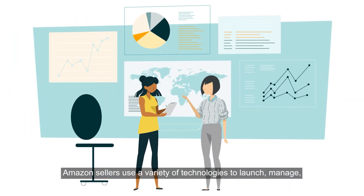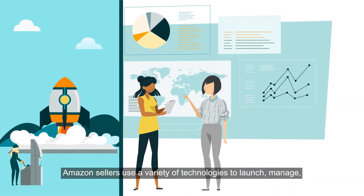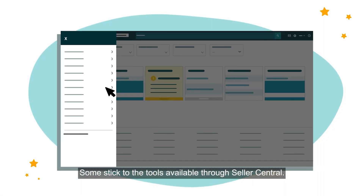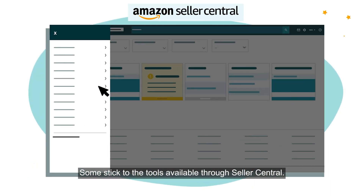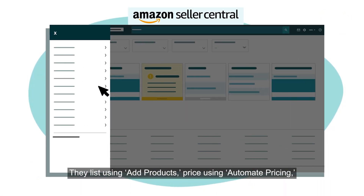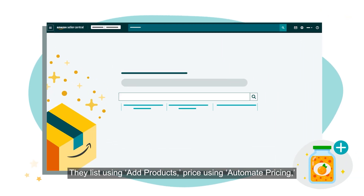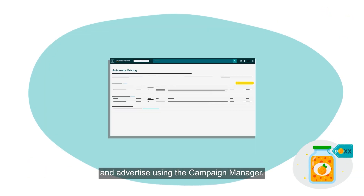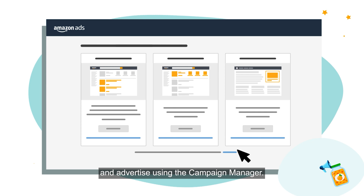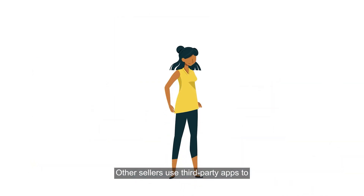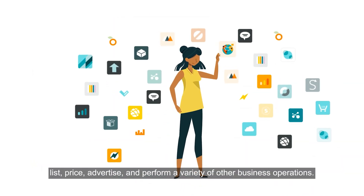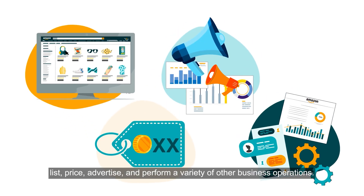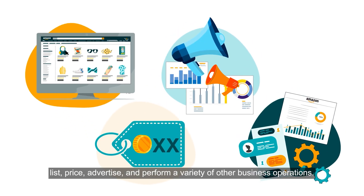Amazon sellers use a variety of technologies to launch, manage, and grow their businesses. Some stick to the tools available through Seller Central — they list using ad products, price using automated pricing, and advertise using the campaign manager. Other sellers use third-party apps to list, price, advertise, and perform a variety of other business operations.